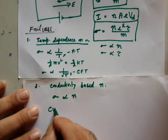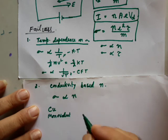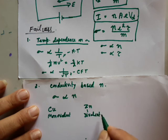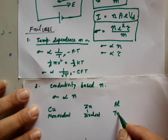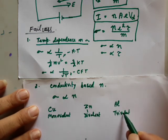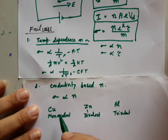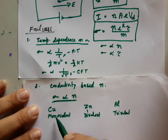Take the example of copper — one of the best conductors. It is monovalent, meaning it has one electron per atom. Zinc is divalent, with two electrons per atom. And aluminum is trivalent, with three electrons per atom. So per atom, aluminum has the most electrons, then zinc with two, then copper with one. According to the classical concept, aluminum should be the best conductor, followed by zinc, then copper.